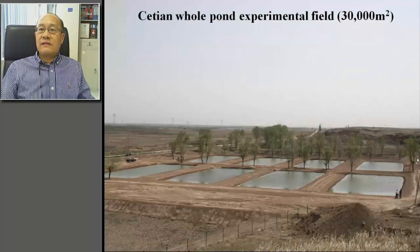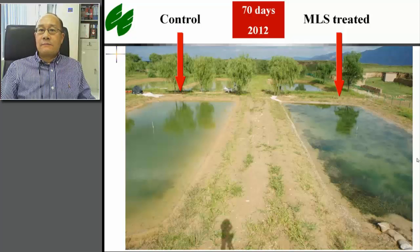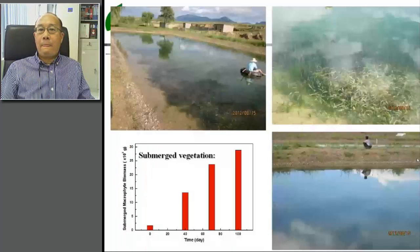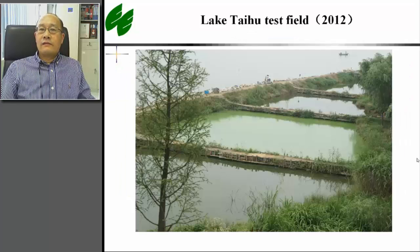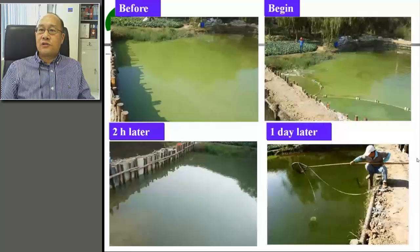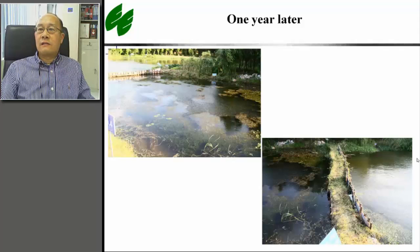This function was further tested in a whole pond experiment in 2012. This is the result 70 days after the treatment. The water transparency of the treated pond was largely improved compared to the control. Submerged vegetation were restored. These are the water quality parameters before and three months after the treatment. This is the result in another test field in Lake Taihu — before the treatment, two hours after the treatment, one day after the treatment, and one year after the treatment for both the treated and non-treated ponds.